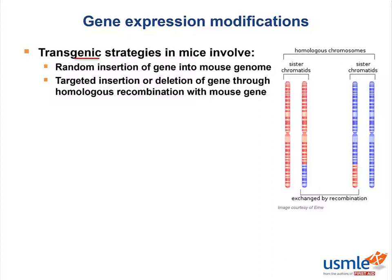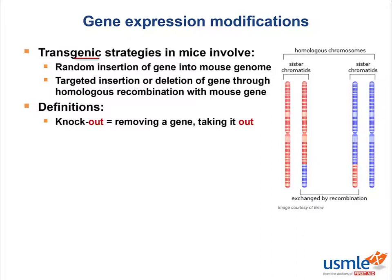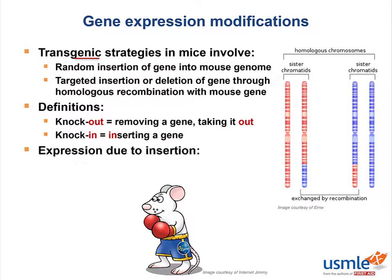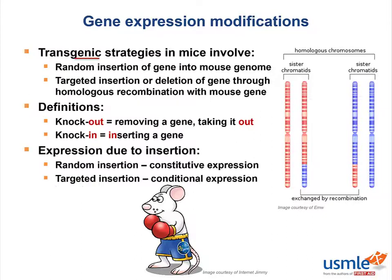When we remove a gene, that is often referred to as knocking it out — knockout, like in boxing. On the flip side, inserting a gene is called knocking in. Expression can differ based on how the gene is inserted. If randomly inserted, it is likely to be constitutively expressed, or constantly transcribed — always on. If the gene was targeted in its insertion, that allows more controlled expression, usually with a condition that needs to be fulfilled for it to be expressed.